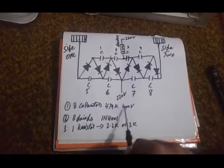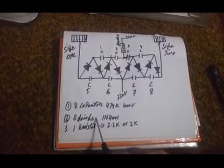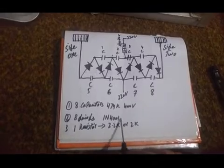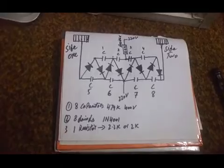First of all, we need eight capacitors and one resistor. The capacitors we need are 474K, 400 volts. And one resistor is 2.2K or 2K - it's okay, no problem, whichever you want, which you can buy from the market easily.